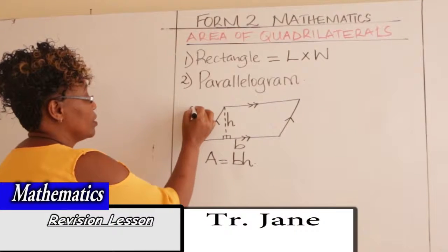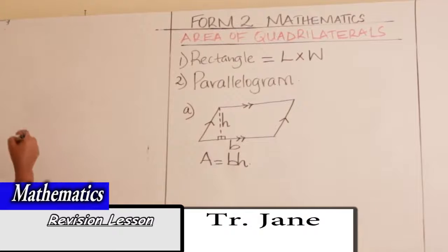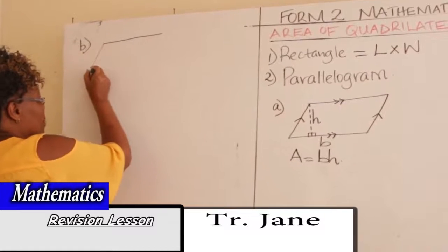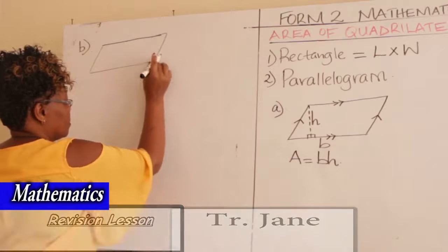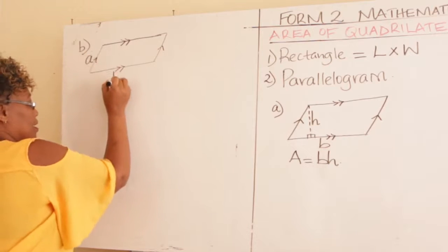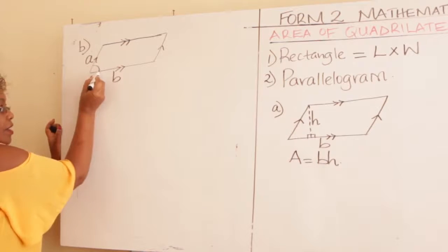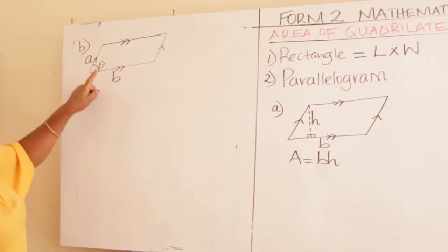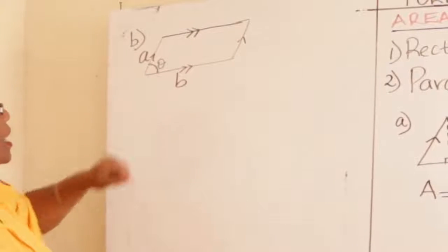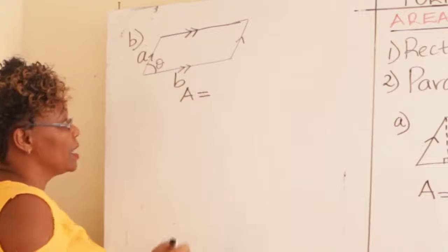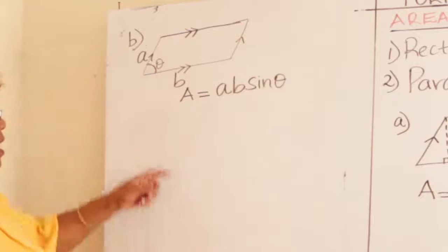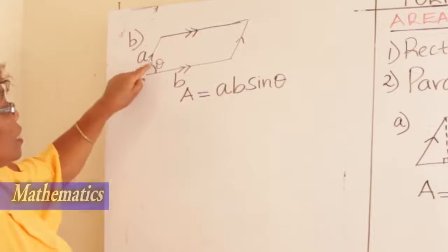We can call this 2A, and we go to 2B, which is a bit new to us. Suppose you have a parallelogram with sides A and B, and in between these two sides you have an angle — we call this the included angle, which is between the two sides you are given. The area of such a parallelogram is equal to A times B times sine theta — A times B times sine of the included angle.